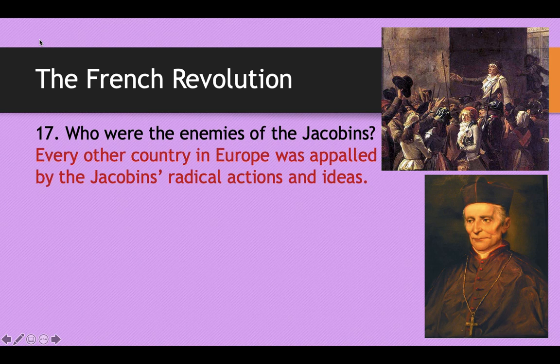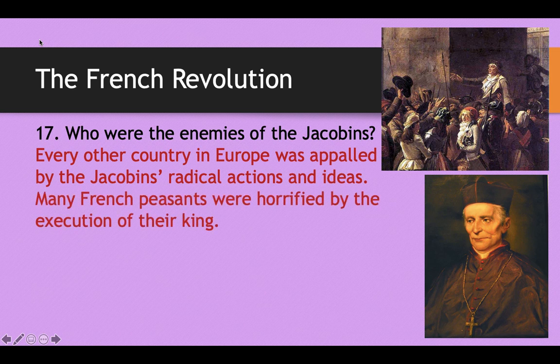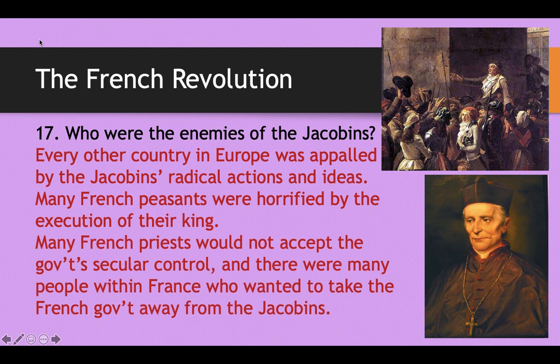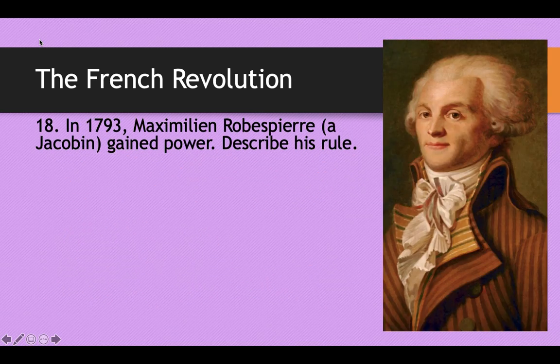The enemies of the Jacobins were pretty much everyone who wasn't a Jacobin. Every country in Europe was appalled by their radical actions and ideas. Even most French peasants were horrified by the execution of their king — they wanted change, but not for him to be slaughtered, especially since many saw the king as divinely appointed by God. There were also many French priests who would not accept the government's secular control, since the Jacobins were very anti-religion.